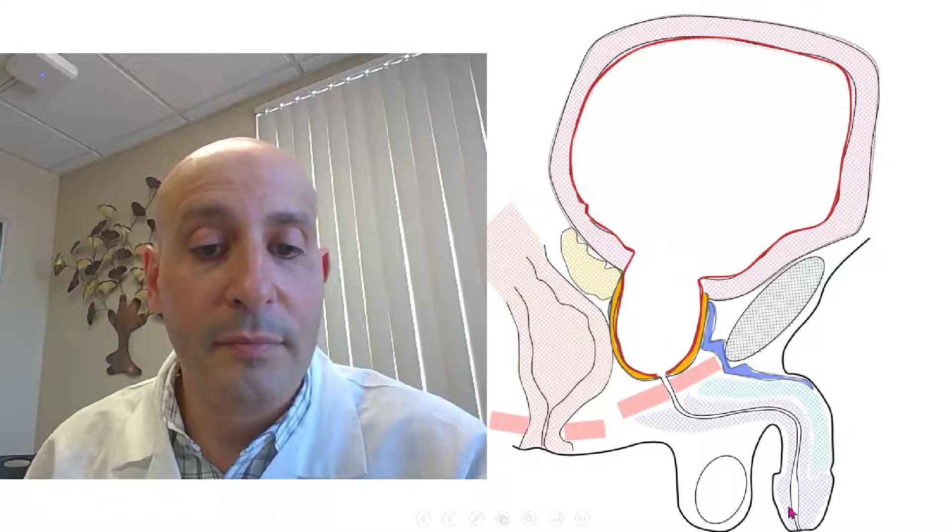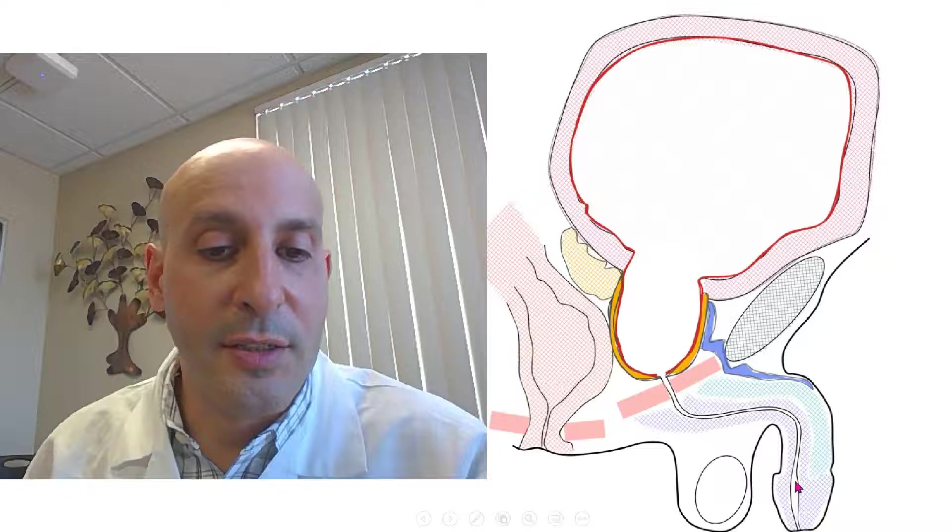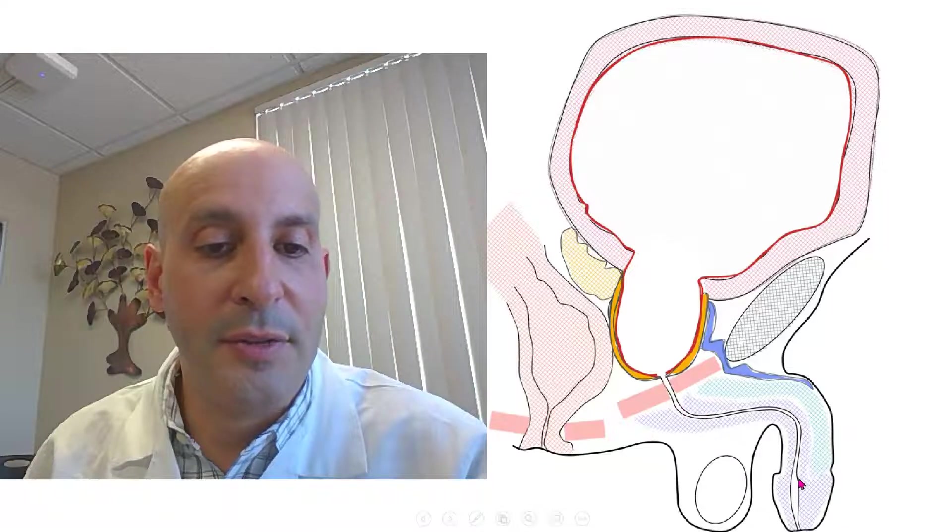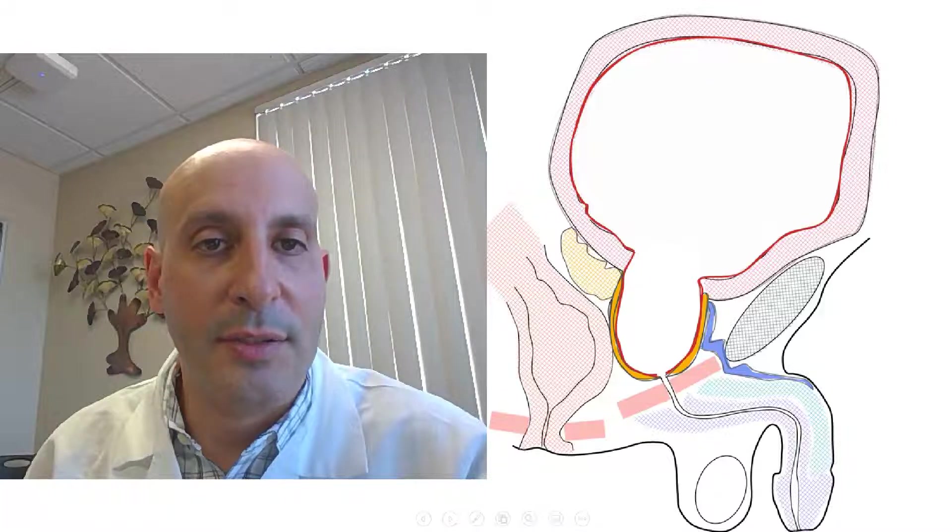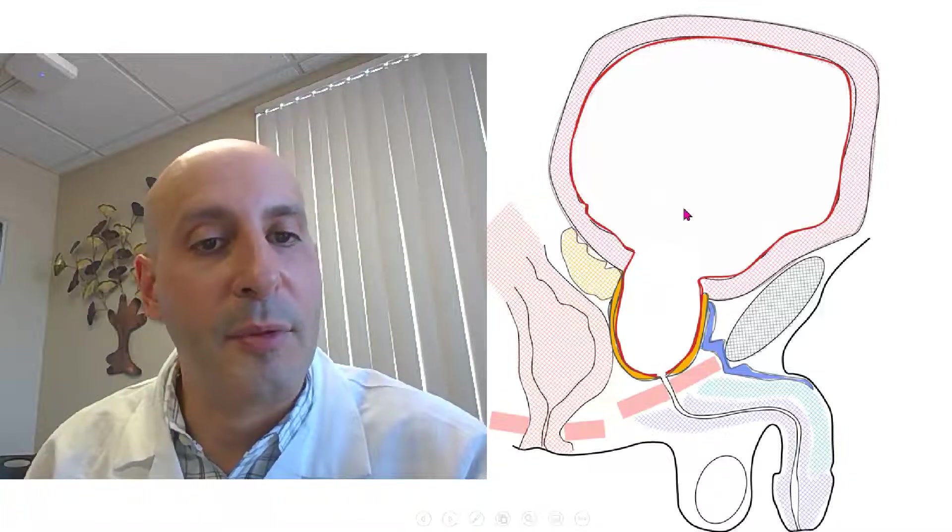The only difference being enucleation, the doctor works through the penis, through the urethra without any external cuts. And in the robotic simple, the doctor works from the other direction, working on the bladder side.